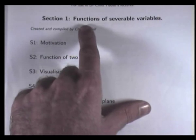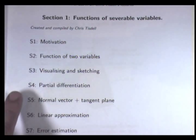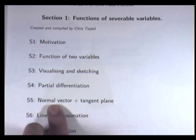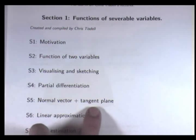Today, we're going to continue our exploration of functions of several variables. In previous videos, we've looked at how to sketch functions of two variables and the surfaces associated with them. We've also defined a partial derivative and looked at how to compute partial derivatives. In today's video, we're going to find out how to calculate a normal vector to a surface and also look at a tangent plane — an analogue of the tangent line to a curve from calculus at school.